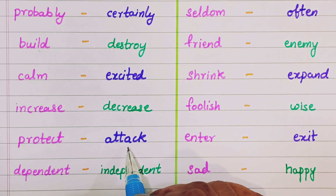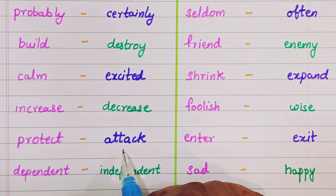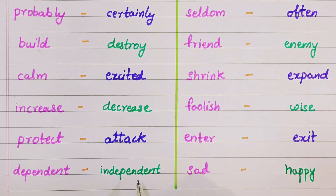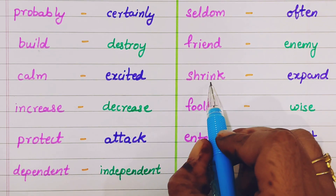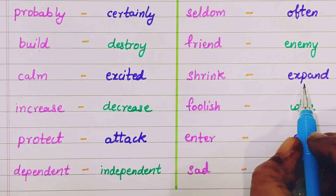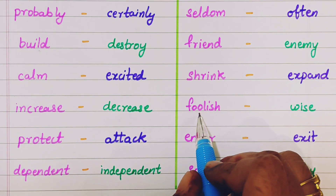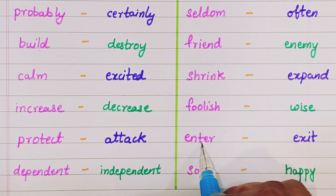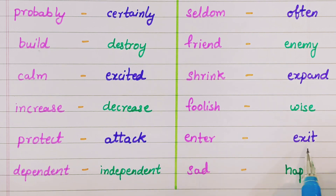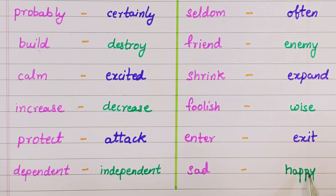Protect, attack. Dependent, independent. Shrink, expand. Foolish, wise. Enter, exit. Sad, happy.